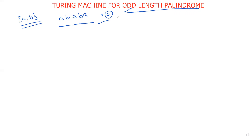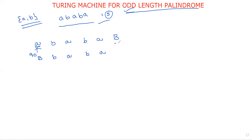The procedure is very simple — almost the same as what we follow in the even-length palindrome. Consider the tape: a b a b a, where capital B represents the blank space. Initially I am at state q0. On state q0, if my input symbol is 'a', this letter is replaced with a blank symbol, and then move forward. While moving forward: if B occurs replace B with B, if 'a' occurs replace with 'a', and move until a blank symbol occurs.